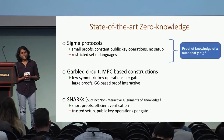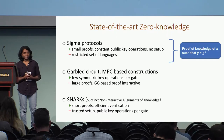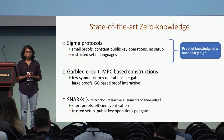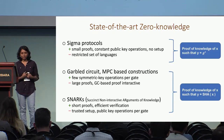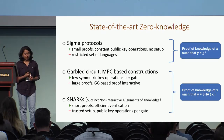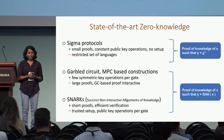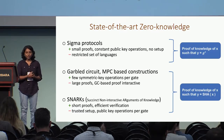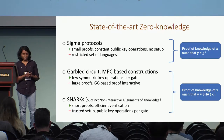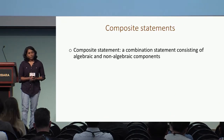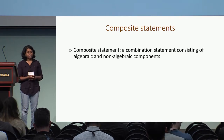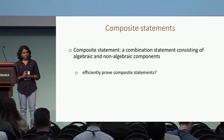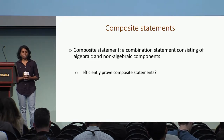So we have very different techniques to prove different kinds of statements. If we want to prove an algebraic statement like knowledge of a discrete logarithm of a public value y, sigma protocols are really efficient. On the other hand, if we want to prove a non-algebraic statement represented as a circuit, for instance knowledge of a pre-image of a hash function like SHA, then the garbled circuit or SNARK approach is more efficient. So the question is how do we prove a statement that is a combination of an algebraic component and a non-algebraic component? We call such statements composite statements.